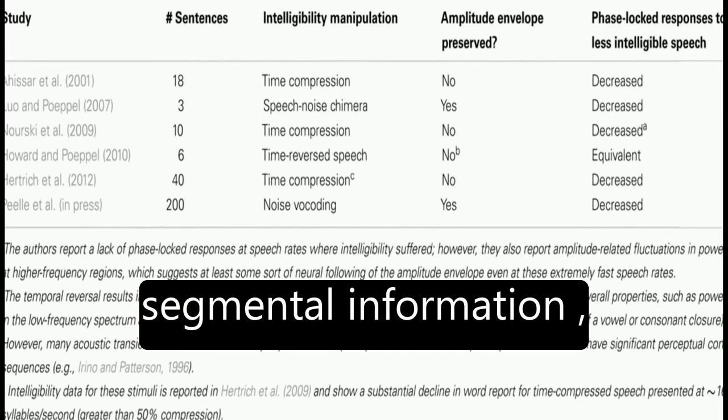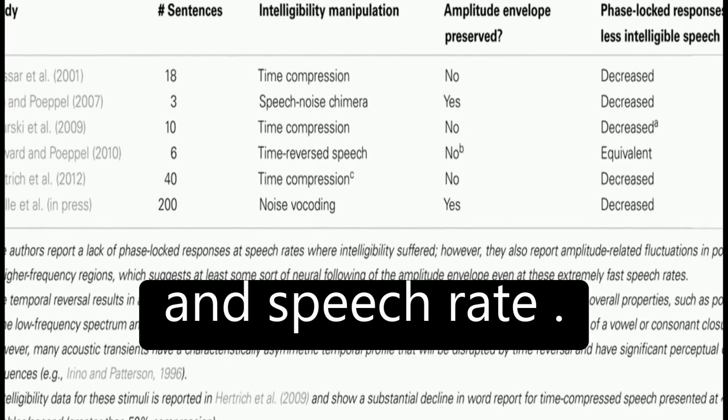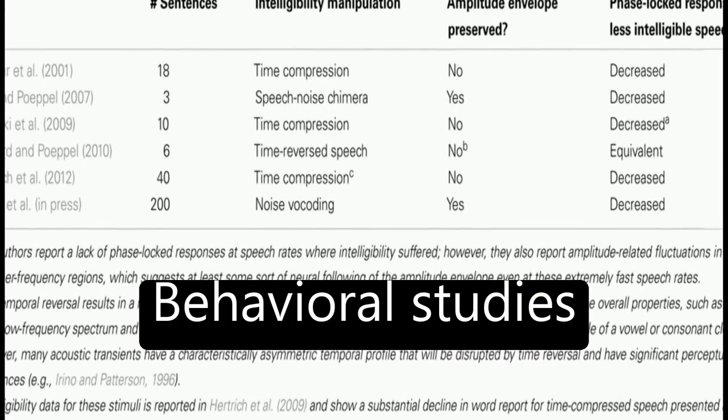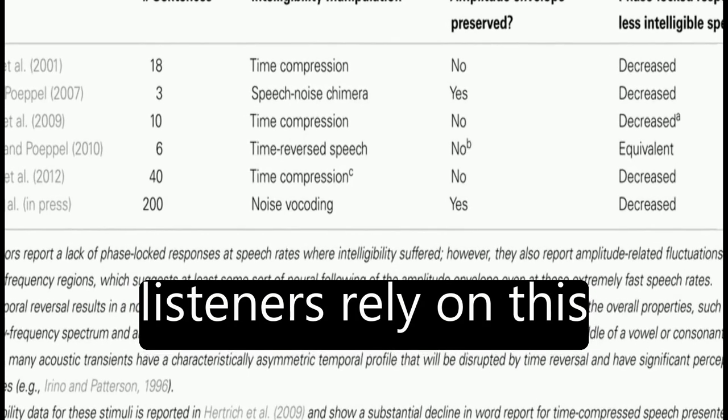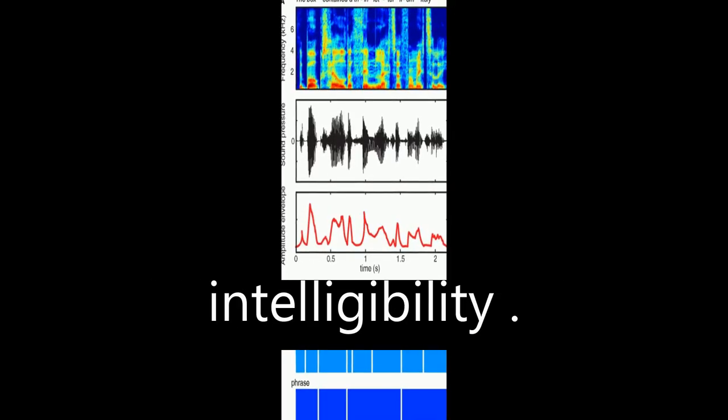It highlights that rhythmic information contains important markers for place and manner of articulation, segmental information, and speech rate. Behavioral studies demonstrate that listeners rely on this information for speech intelligibility.